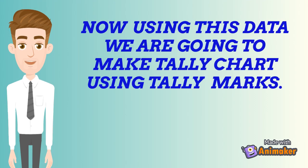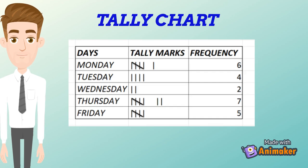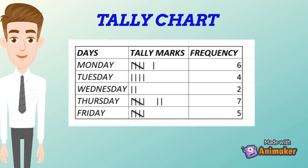Now using this data we are going to make a tally chart using tally marks. On Monday, 6 students were absent. Tuesday, 4 students were absent. Wednesday, 2 students were absent. Thursday, 7 students were absent. Friday, 5 students were absent. In this way, information about the students who were absent for that particular week can be represented by tally marks.